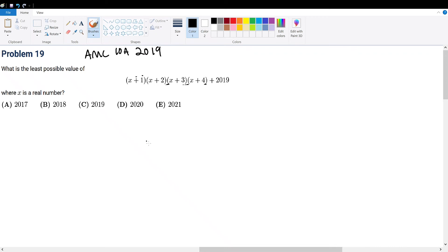AMC 10 in 2019, problem 19. So we're given this polynomial, and we're trying to find the x number such that we get the lowest value of this.